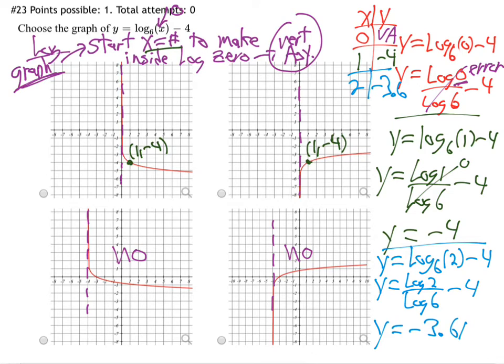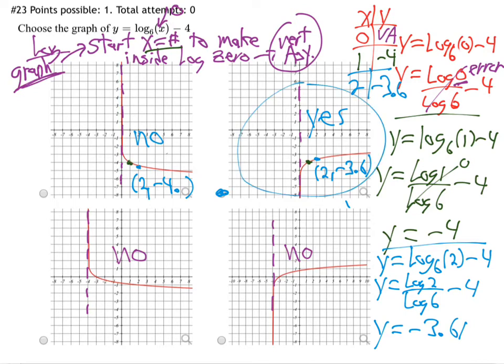Over 2, down about 3.6. Checking the graphs: one goes below negative 4, which is too low. The other one looks correct — over 2, down 3.6 looks right. That's our answer. We start by what makes the inside of the log 0, then go up one at a time from there.